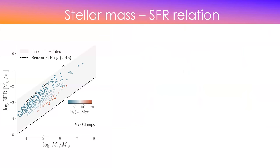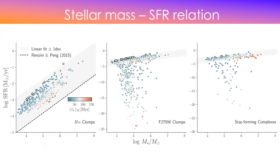Plotting these on the stellar mass–star formation rate relation, the H-alpha clumps are systematically above the relation found for galaxies. We interpret this as these being isolated star-forming regions — in galaxies, the relation is watered down by non-star-forming regions. Interestingly, when you put the UV clumps and star-forming complexes on the same relation, some fall in the same band as H-alpha clumps, while others fall below — because of those two types of star formation histories.